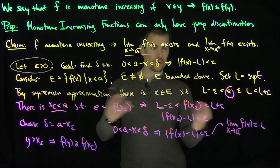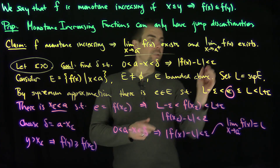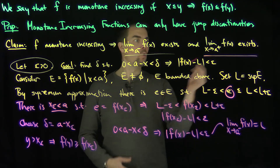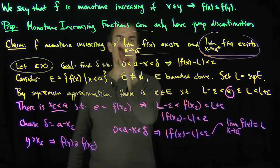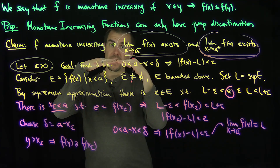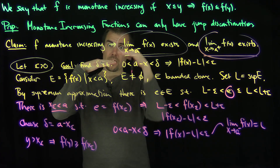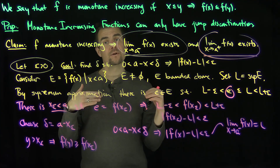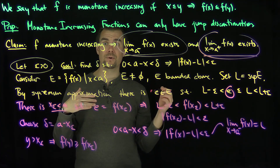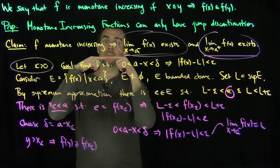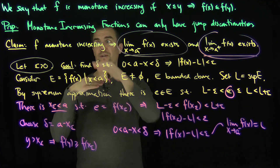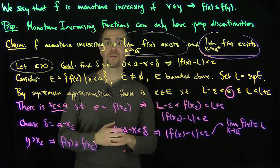The exact same similar reasoning — just with the opposite inclusion — will show that the right limit exists. Now I know that both limits exist, and one of two things will happen: either those limits agree and the function is continuous at point a, or they disagree and you have a jump. There's no way it can be a removable discontinuity, since both those limits exist, and for a removable discontinuity the limit must equal the function value at that point. So for monotone increasing functions, you can only have jump discontinuities. Thank you very much.